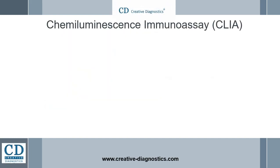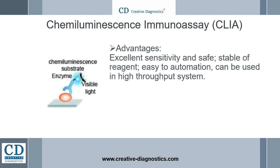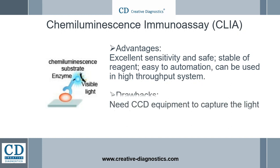Chemiluminescence immunoassay (CLIA) is a method to determine the concentration of samples according to the intensity of the luminescence that the chemical reaction emits. CLIA combines the chemiluminescence systems and the immunoreactions. Some reagents have been used as chemiluminescence labels. Upon the introduction of the CL substrates, the system produces chemiluminescence.